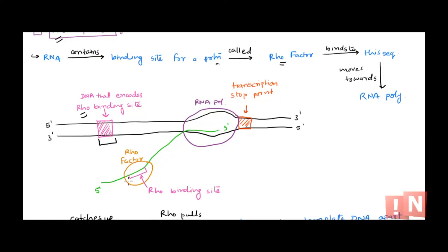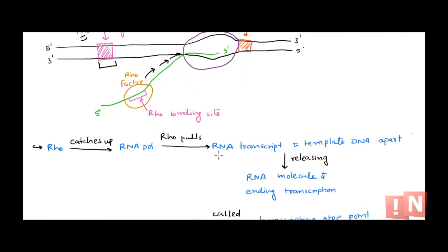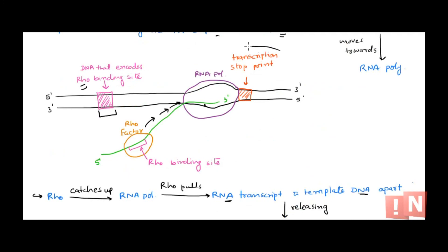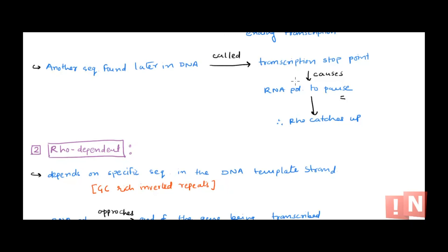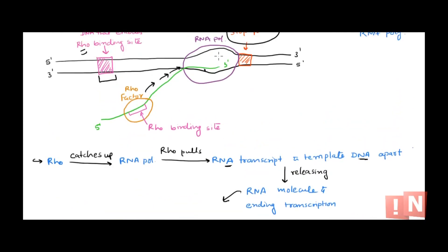The rho protein binds to this newly synthesized RNA and starts moving towards the RNA polymerase. Once it reaches the RNA polymerase, it has the ability to separate the RNA transcript from the template strand — it pulls apart the RNA transcript from the DNA template. Once the strands are separated, the RNA molecule is released and transcription ends. At the end, there is a transcription stop point in the DNA that causes the RNA polymerase to pause, so the rho factor can catch up at the transcription bubble and separate the transcript from the template DNA.